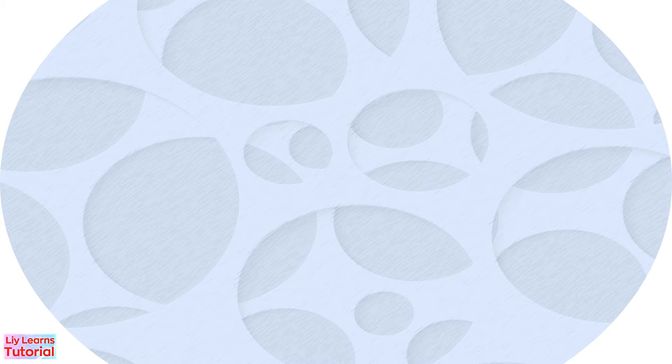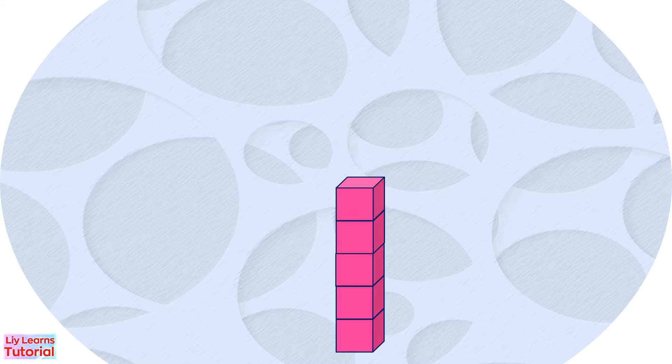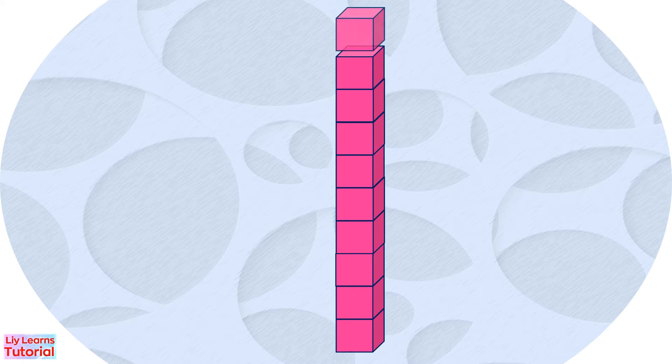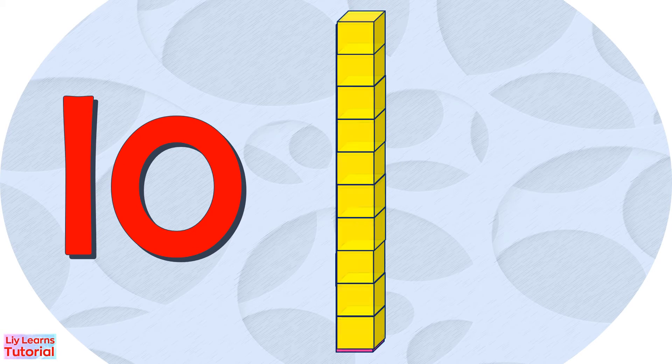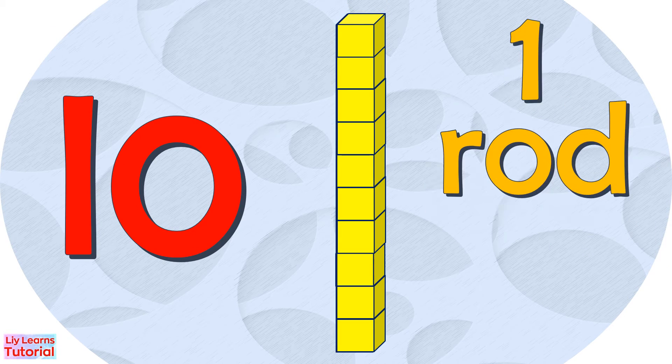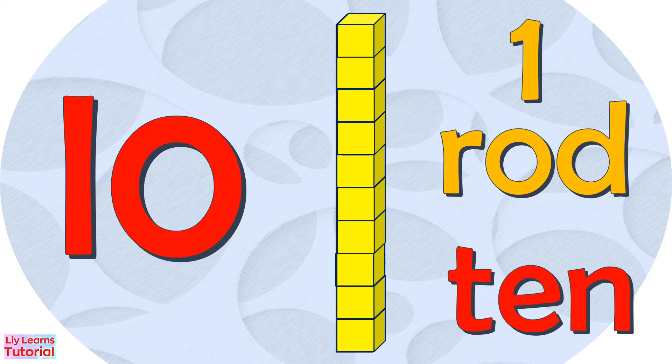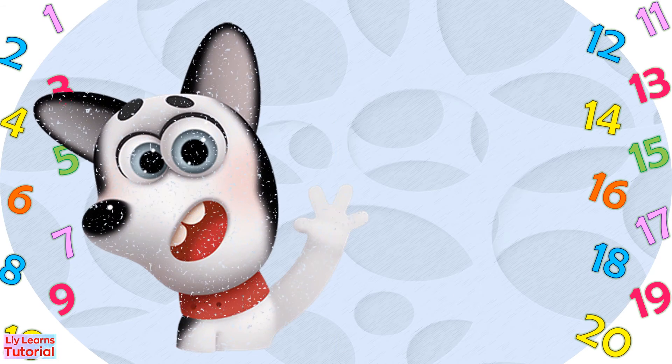Let's count the blocks. 1, 2, 3, 4, 5, 6, 7, 8, 9, 10. There are 10 blocks. We can also say this is one rod. When we count by tens, we say 10 for one rod, because each rod is equal to 10 units or 10 blocks.